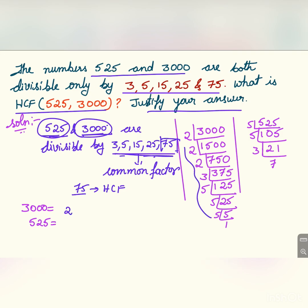The prime factors of 3000 are 2 to the power 5 into 3 into 5 to the power 5, and 525's are 5 square into 3 into 7. Therefore, the HCF of these two numbers: among 5 square and 5 cube...